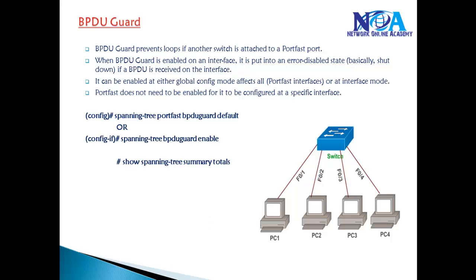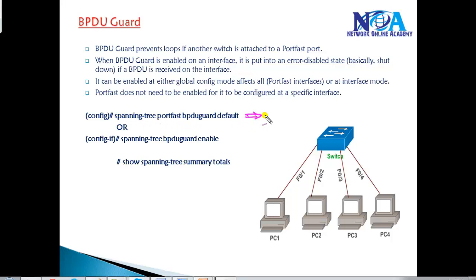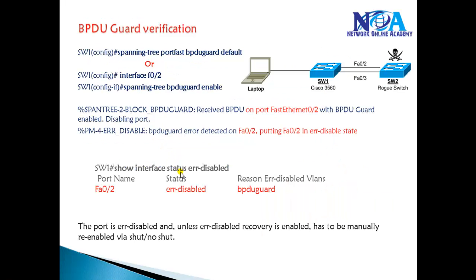To configure BPDU Guard, just like Port Fast, we can enable it globally in global configuration mode using the command: spanning-tree portfast bpduguard default. Or we can enable it on specific ports using the interface range command. Port Fast should be enabled first, then BPDU Guard or BPDU Filter. We can verify with specific show commands, which we'll cover in more detail in the next video with lab exercises.